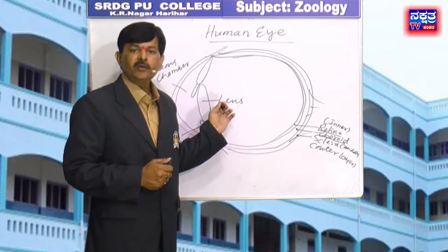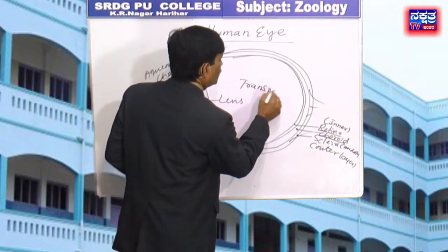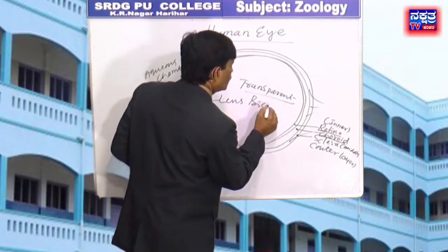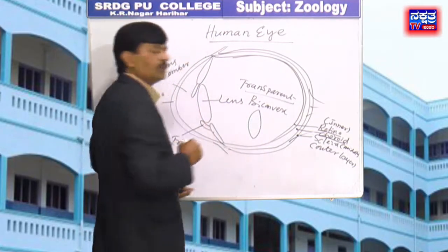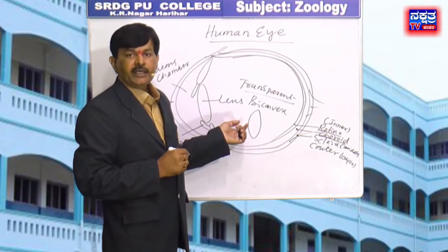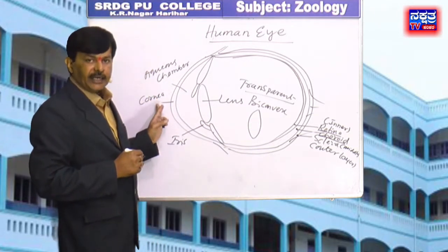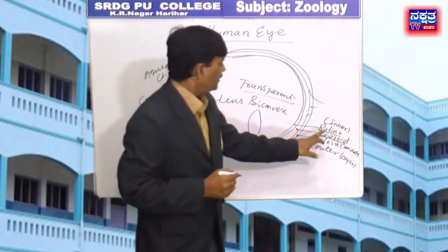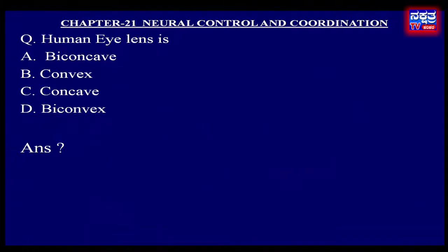In the human eye, the lens is a transparent biconvex structure. Along with the cornea, it helps to refract light to be focused on the retina, which is the inner layer. Therefore, in the given options, D — biconvex — is the right answer.